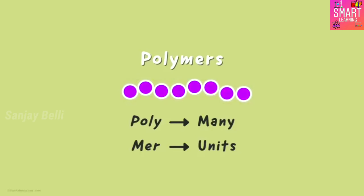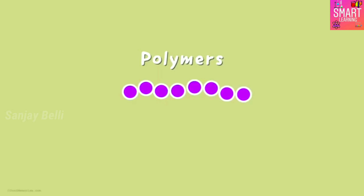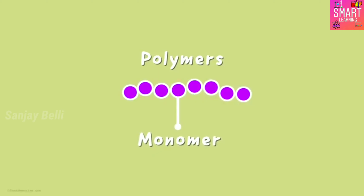Do you know what the single unit is called? It is called a monomer. So monomers repeat themselves many times to form an extremely long chain, which forms nothing but a polymer.